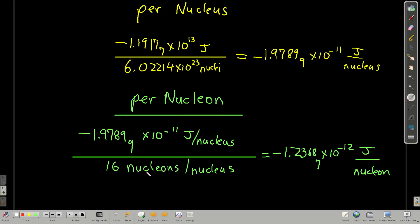So, in oxygen 16, we have 16 nucleons, right? That is 8 protons and 8 neutrons. So, if we take the difference in energy per nucleus divided by the number of nucleons in a nucleus, this is how much energy per nucleon, that is per proton or neutron on average. So, negative 1.2369 times 10 to the minus 12 joules per nucleon.